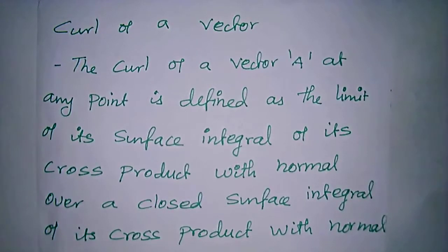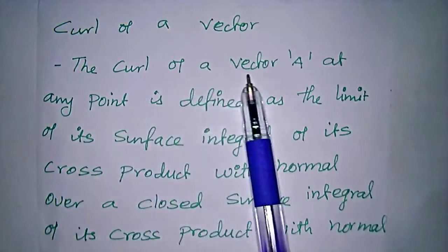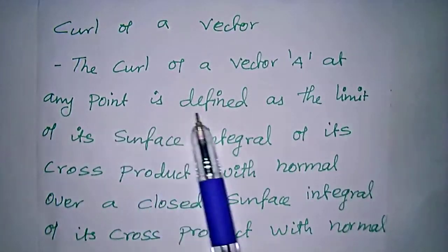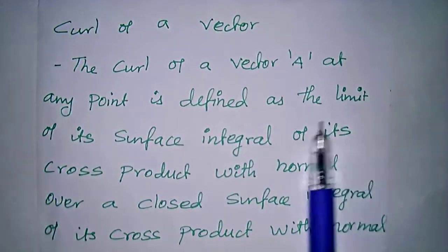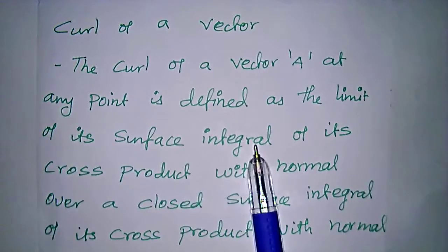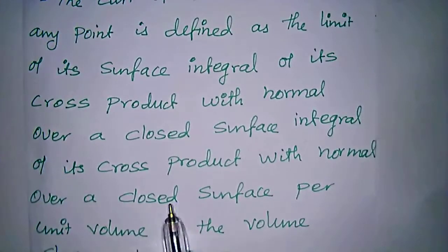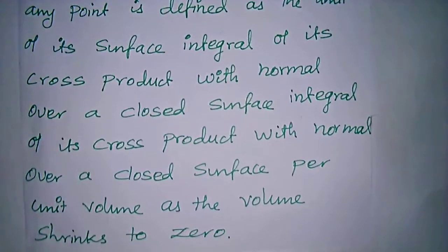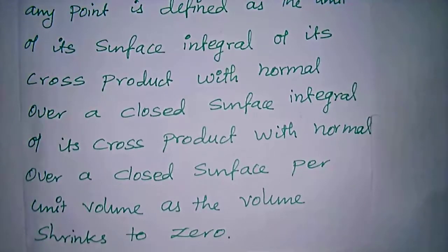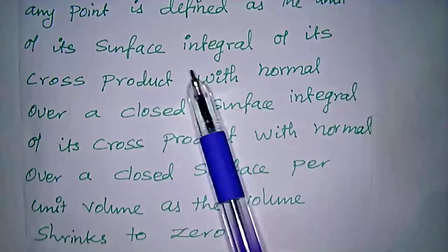The curl of a vector A at any point is defined as the limit of its surface integral of its cross product with the normal over a closed surface per unit volume as the volume shrinks to zero. This definition is similar to that of divergence — it involves the limit of a surface integral.